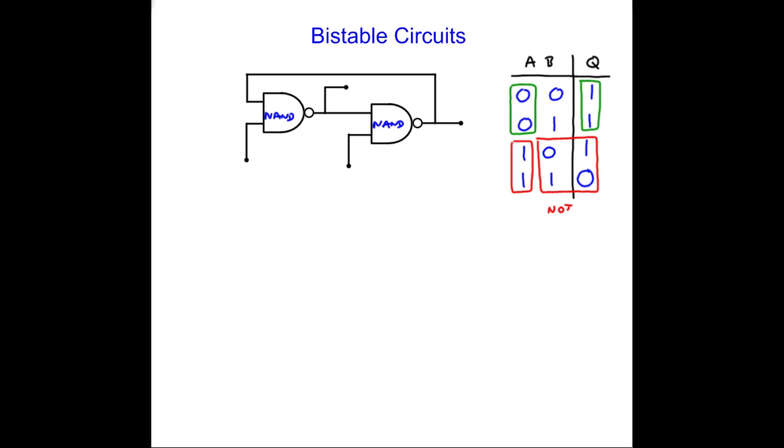So let's label our bistable. That's Q, that's Q bar. This is set, and this is reset. And what we're going to do is we're going to try and consider all the different combinations of set, reset, and see what effect they have on Q and Q bar.